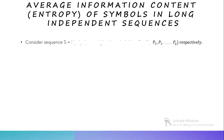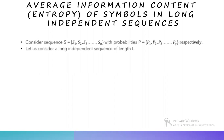Let us consider the source alphabets S equal to S1, S2 up to Sq, with probabilities P equal to P1, P2 up to Pq respectively. Let us also consider a long independent sequence of length L symbols.